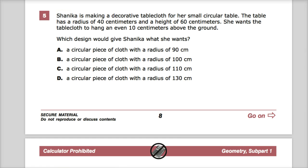So what we're dealing with is she's got this 40 centimeter radius. She wants the tablecloth to go down the table all the way down to right here, where this is 10 centimeters off the ground.